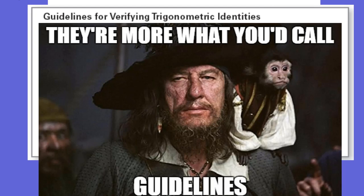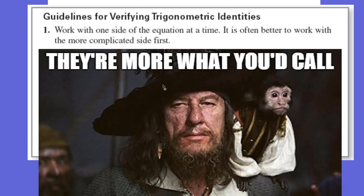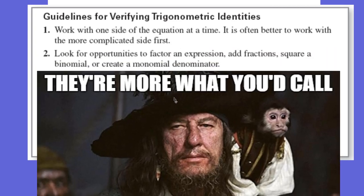They're more what you call guidelines for verifying trig identities. My first guideline is: work with only one side of the equation at a time. It's often better to work with the more complicated side first, because it's easier to take something complicated and make it simpler. Look to factor things. Look to add fractions by getting common denominators. Look to square binomials. Look to create binomial denominators — you're going to try to do a bunch of different things.